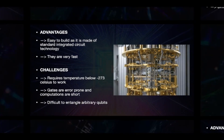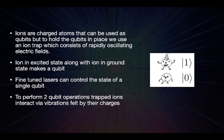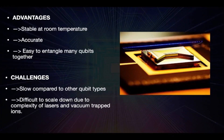The second way is trapped ion quantum computers, where charged atoms or ions are used as qubits, and an ion trap consisting of rapidly oscillating electric fields is used to trap these qubits. Ions in the excited state and ground state together form one qubit, and fine-tuned lasers are used to control the state of this qubit. This circuit is stable at room temperature, accurate, and the qubits are easier to entangle, but it is slow compared to others and difficult to scale down.